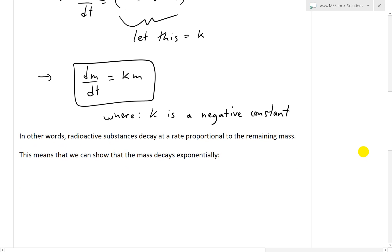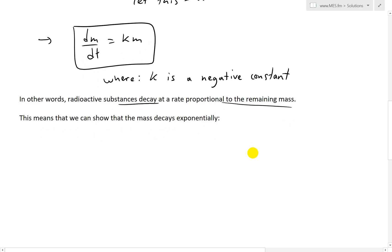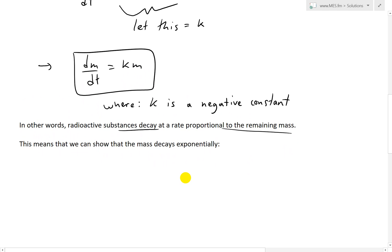In other words, what this differential equation says is that radioactive substances decay at a rate proportional to the remaining mass. dm/dt is proportional by this K constant to the mass of that substance at that given time.